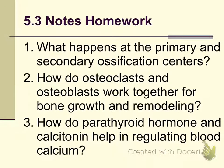5.3 notes homework. Number one: what happens at the primary and secondary ossification centers? Number two: how do osteoclasts and osteoblasts work together for bone growth and remodeling? Number three: how do parathyroid hormone and calcitonin help in regulating blood calcium?